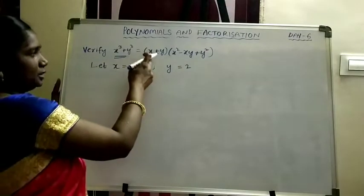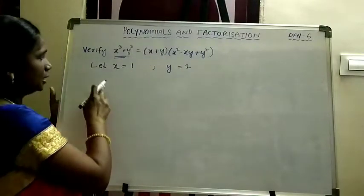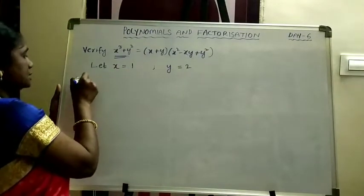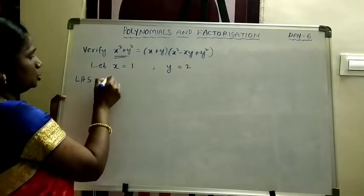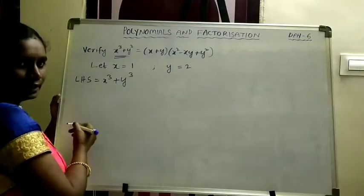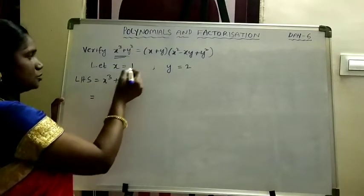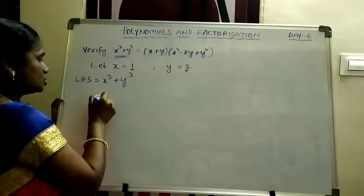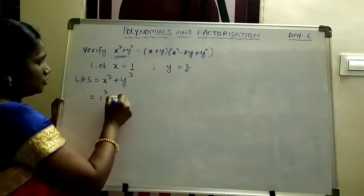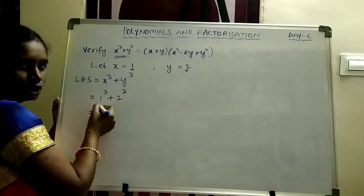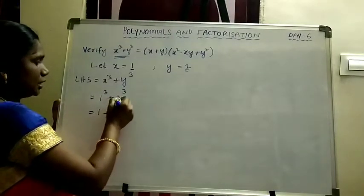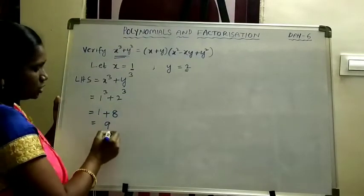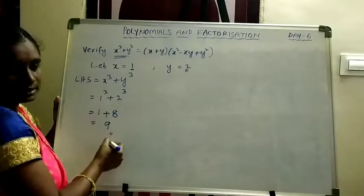To verify whether it is an identity or not, let x equal to 1 and y equal to 2. First let's check LHS. LHS equals x cube plus y cube. In place of x we write 1, and in place of y we write 2. So 1 cube plus 2 cube: 1 cube is 1 into 1 into 1, which is 1. Plus 2 cube: 2 twos are 4, 4 twos are 8. So 1 plus 8 equals 9. The value of LHS is 9.